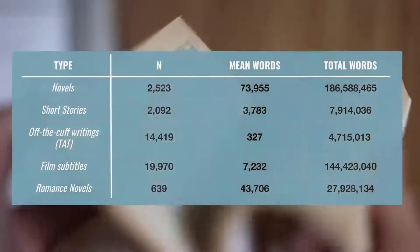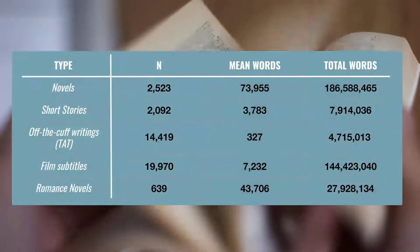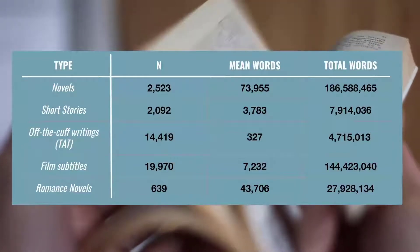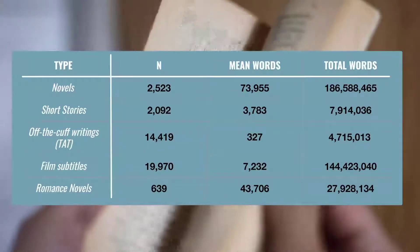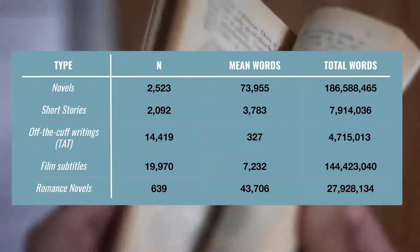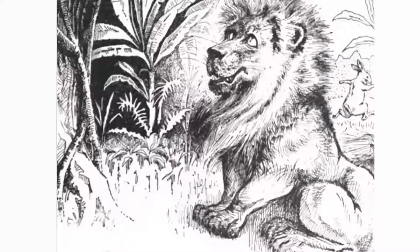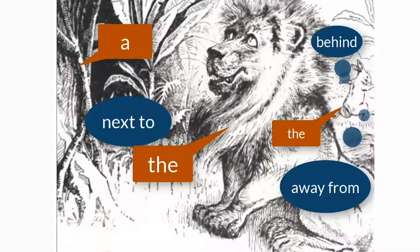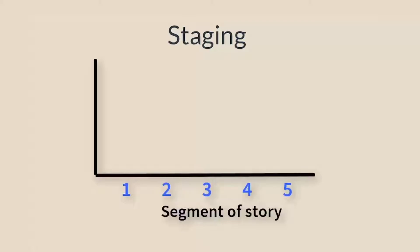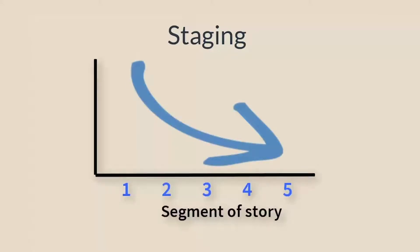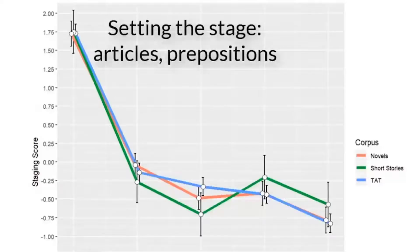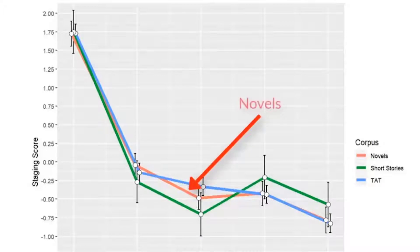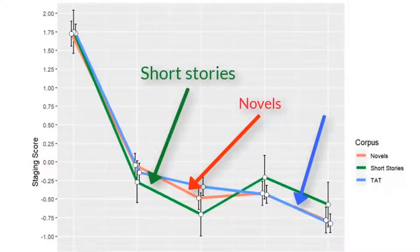To do this, we computer-analyzed thousands of stories — ranging from epic novels and short stories to off-the-cuff stories created by everyday people — to identify staging, plot progression, and cognitive tension. Articles and prepositions are needed to provide information about people, places, and things. We expected that articles and prepositions would be used at the highest rates at the beginning of stories and would drop as the story unfolded. Our results found just this, and this narrative trend holds across novels, short stories, and amateur stories.